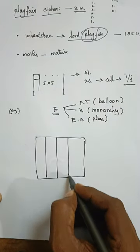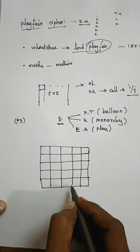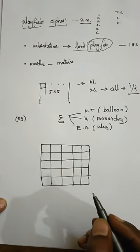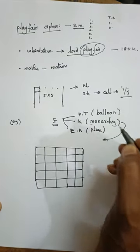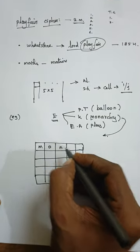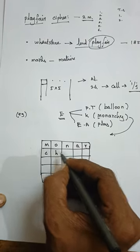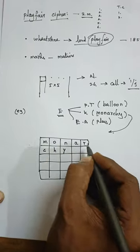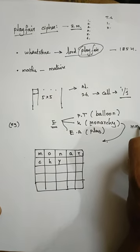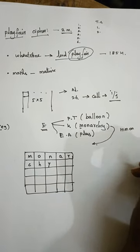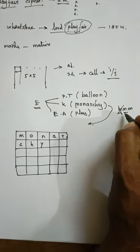Here is the five-by-five grid. The first step is to fill in the keyword from left to right. We have the letters: M, O, N, A, R, C, H, Y. There are no repeated letters in 'MONARCHY', so everything is straightforward. If there were two same letters in the key, you should not repeat them - take only the first occurrence.